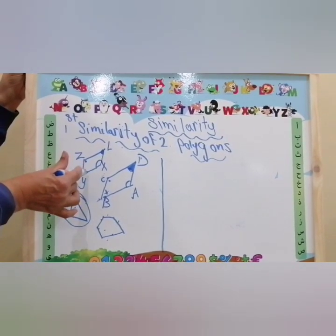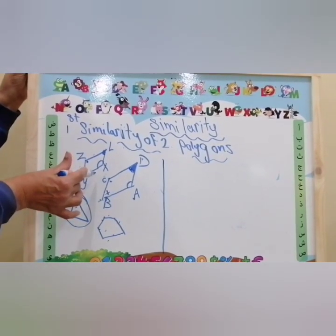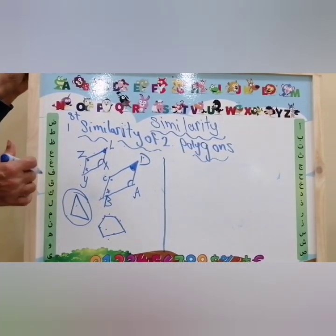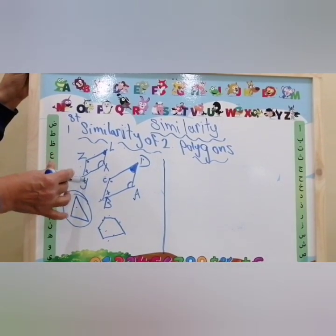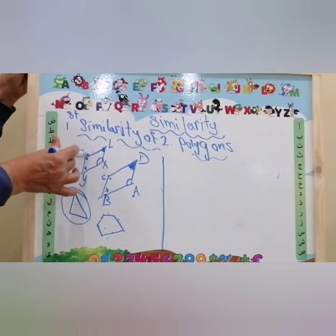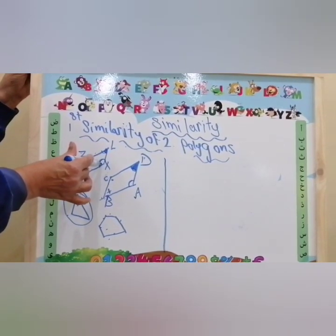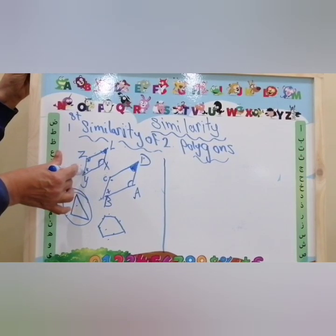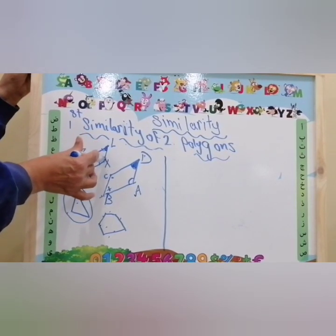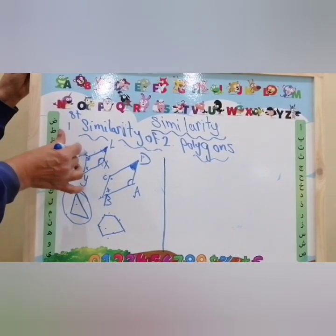What is this figure? How many sides? 1, 2, 3, 4. This is a polygon, a quadrilateral, which consists of a union of four sides. Z is a vertex, L is a vertex, X is a vertex, and Y is a vertex. A vertex is a point of intersection of two line segments, such as LX and ZL.